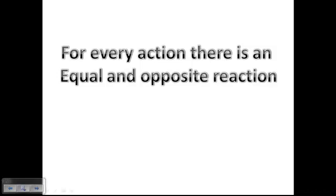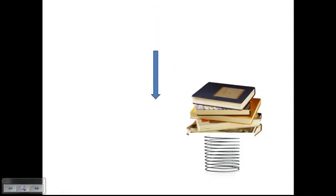Let's start with a simple example. We have a spring, and it's uncompressed, so the spring's not really pushing up. I'm going to drop a set of books on the spring. As I set the books on the spring, it's going to compress the spring. The downward force of the books acting on the spring — according to Newton's third law — will have a reaction: the spring pushing back up on the books. So we have an action-reaction pair: the action of the books pushing down, the reaction of the spring pushing back up.